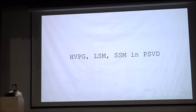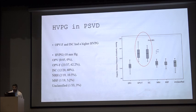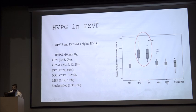Regarding non-invasive tests — HVPG, LSM, SSM — in PSVD: a study of 173 patients categorized the histological spectrum into obliterative portal venopathy (OPV), OPV with fibrosis, incomplete septal cirrhosis (ISC), NRH, mega-sinusoid with fibrosis, and unclassified. Patients with OPV with fibrosis and ISC had a slightly higher HVPG above 10, compared to OPV alone, NRH, or unclassified groups which had lower HVPG.